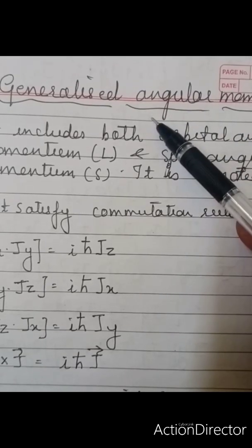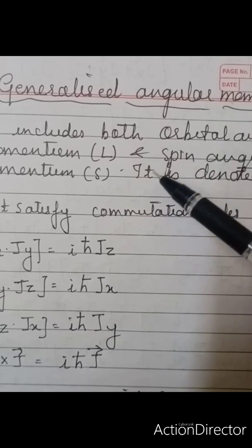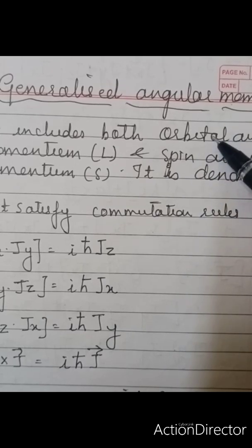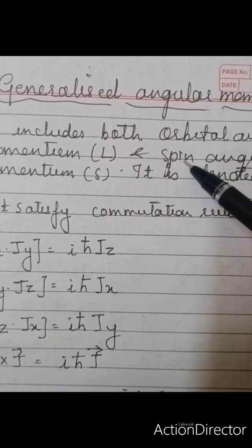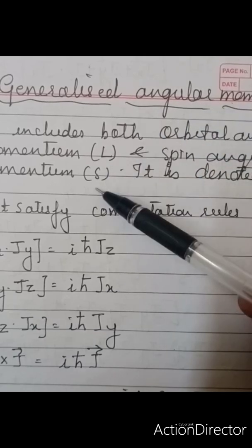In today's lecture, let us talk about the generalized angular momentum. It includes both the orbital as well as the spin angular momentum. Orbital angular momentum we will be denoting by L and spin angular momentum denoted by S. The general angular momentum will be denoted by J.